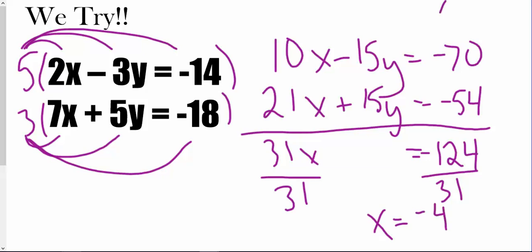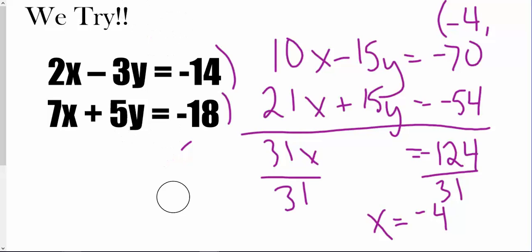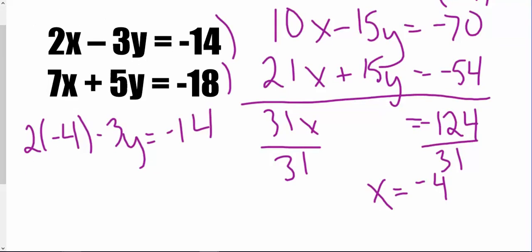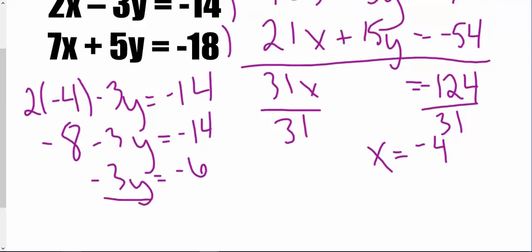So my x-coordinate is negative 4. I'll plug that into the top equation: 2 times negative 4 minus 3y equals 14. If you struggle with negatives, using the second equation might help since you won't be dividing by a negative at the end. Adding 8 to both sides gives negative 3y equals negative 6, then dividing by negative 3 gives y equals 2.